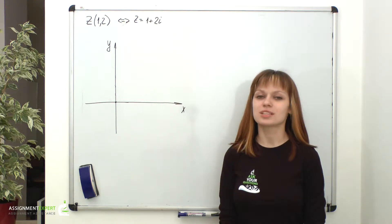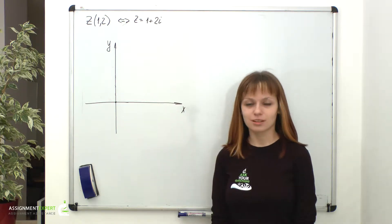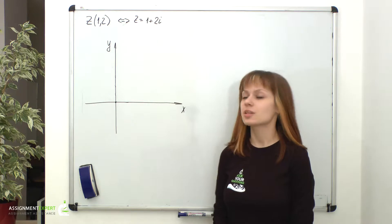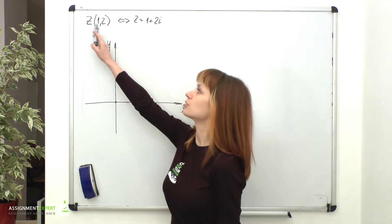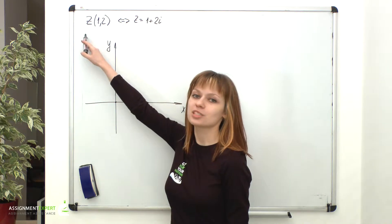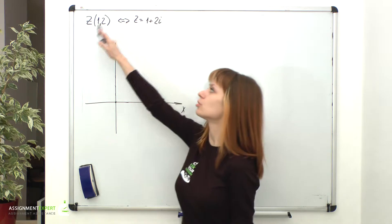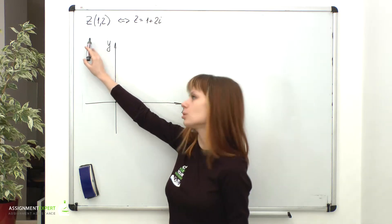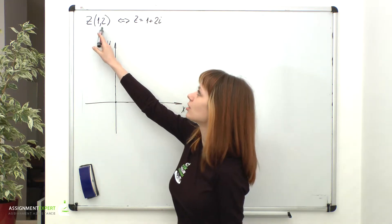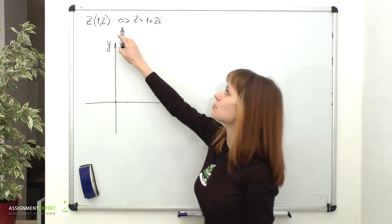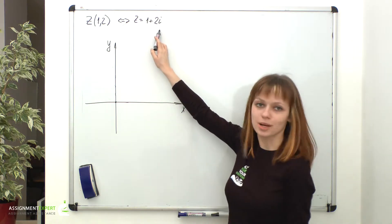Earlier we talked about representing complex numbers as pairs. The first number in such pairs stands for the real part of a complex number, and the second number stands for its imaginary part. So if we have z(1, 2), it means the same as z equal to 1 plus 2i.